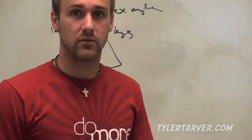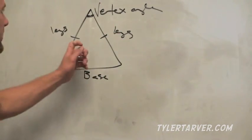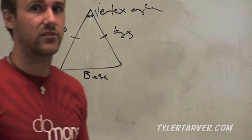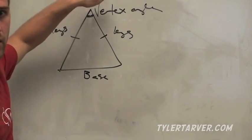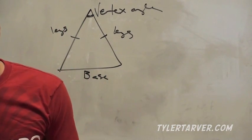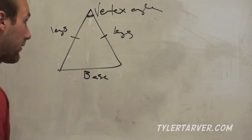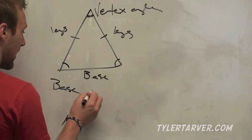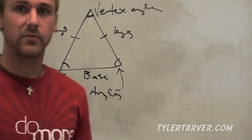The legs are congruent and the base is always opposite the vertex angle — it's whatever's left over. The base angles are located at either end of the base, right here and right here.